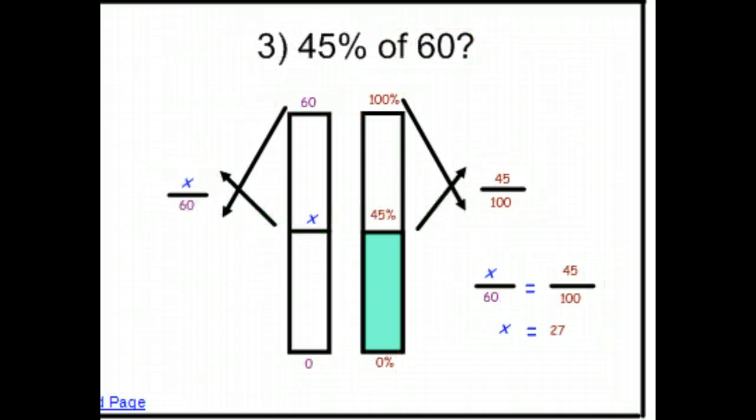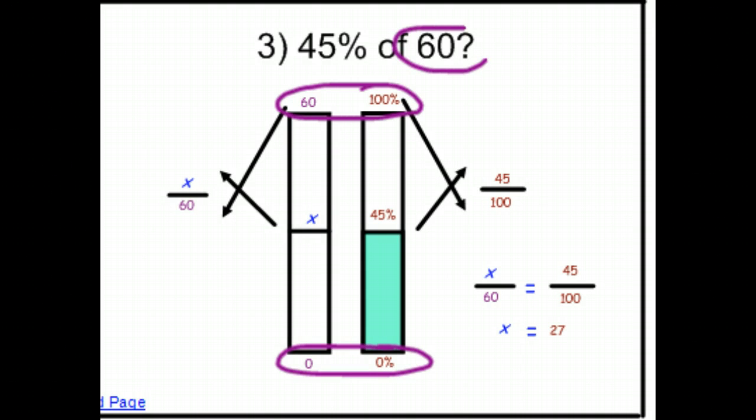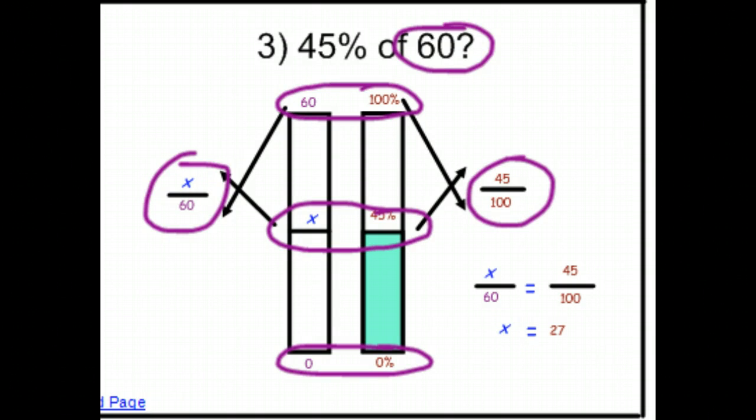And finally, for number 3, again, set up 0% at the bottom. 100% which is the same as 60 because we're finding 45% of this 100%. Whatever we're finding a percent of, that is your 100%. Marked 45% on the bar, which is close to at a similar level to the 50% because, again, this is just the best that we can do. X over 60 is the same as 45 over 100. Set those two equal as a proportion and you find that X is equal to 27.